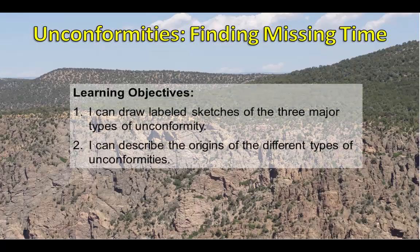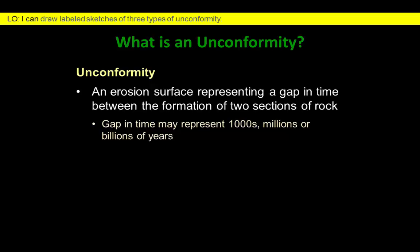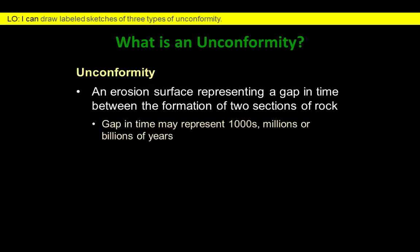Our learning objectives are that you'll be able to identify the characteristics of different types of features called unconformities and to explain how they formed. These unconformities are the physical representation of a gap in time. An unconformity is an erosion surface representing a gap in time between the formation of two sections of rock.